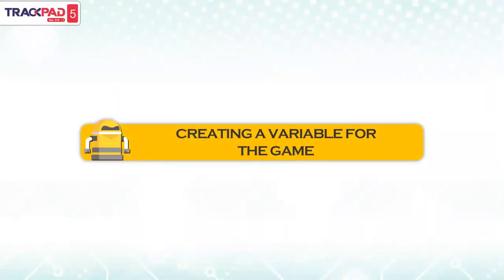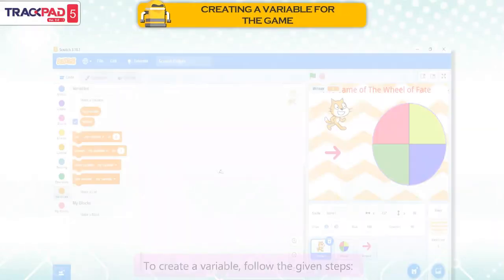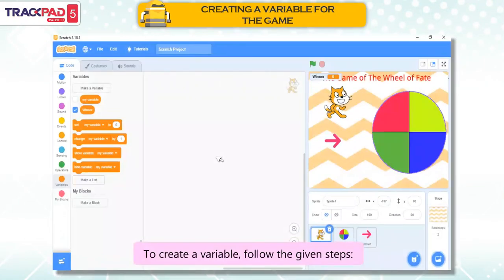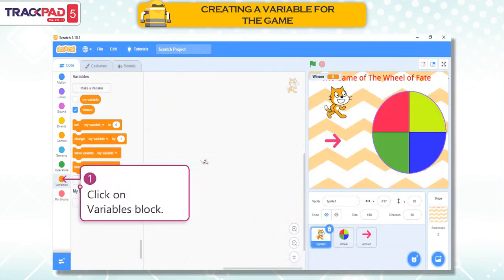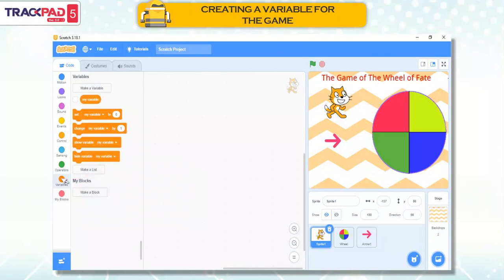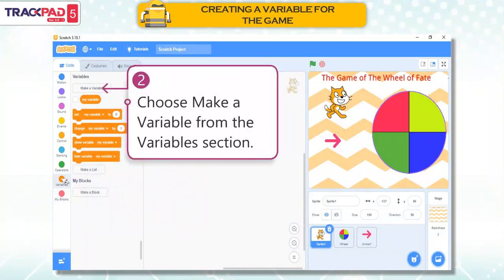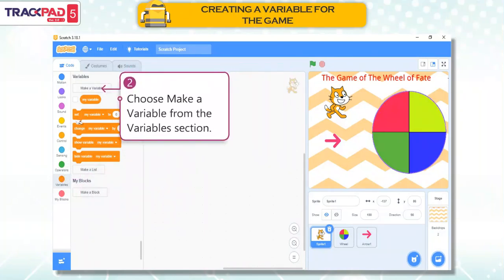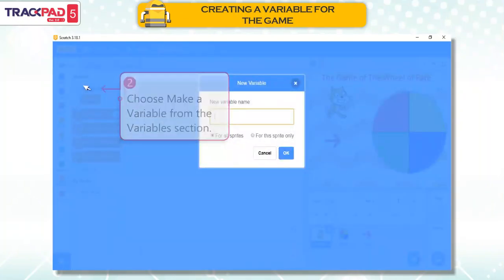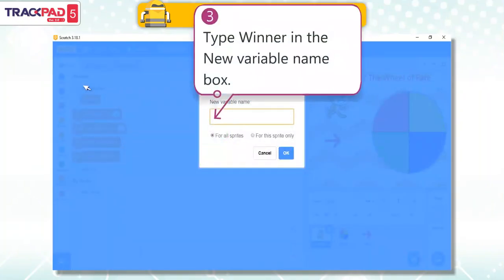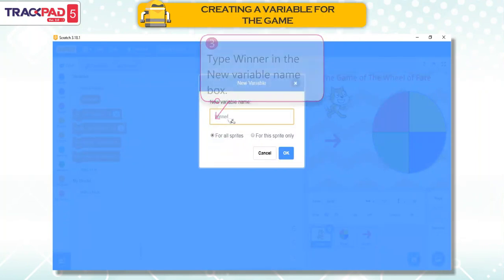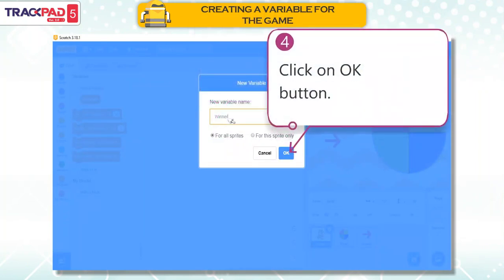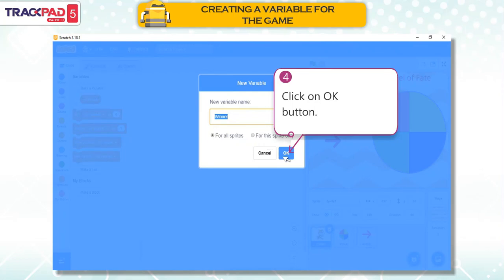Creating a Variable for the Game. To create a variable, follow the given steps. First, click on Variables block. Second, choose Make a Variable from the Variables section. Third, type Winner in the new variable name box. Fourth, click on OK button.